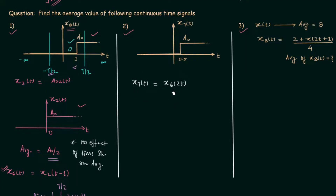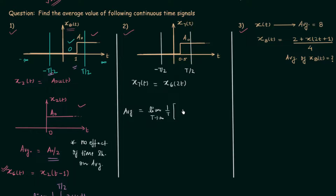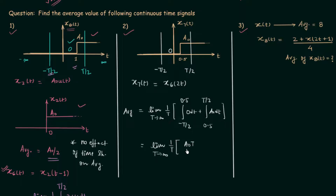This is the relation between x7t and x6t. To find the average value of signal x7t, we again set the range from −T/2 to T/2 to include all amplitude transitions. There is only one amplitude transition, so the average equals: limit T→∞ of (1/T) × [integral from −T/2 to 0.5 of 0 dt plus integral from 0.5 to T/2 of a0 dt]. When you simplify this you get limit T→∞ of (1/T) × a0·T/2, and T cancels to give a0/2.